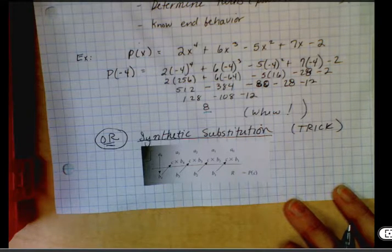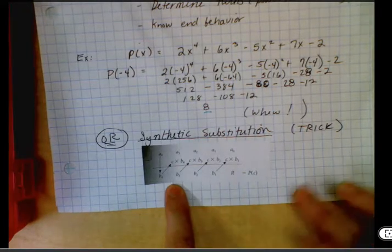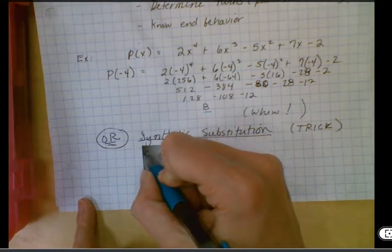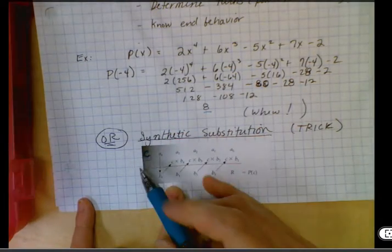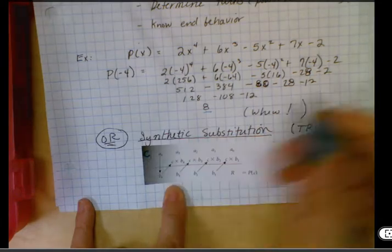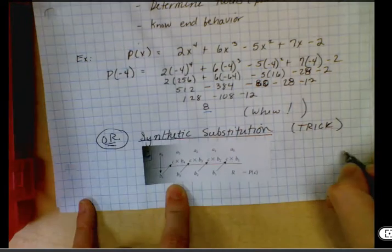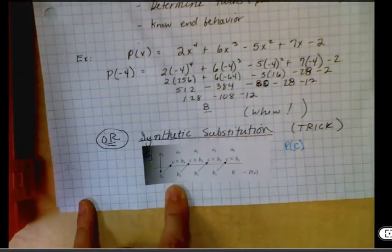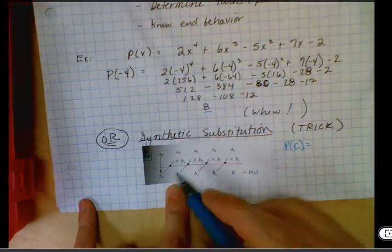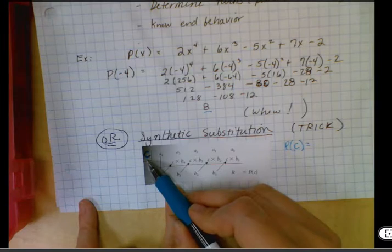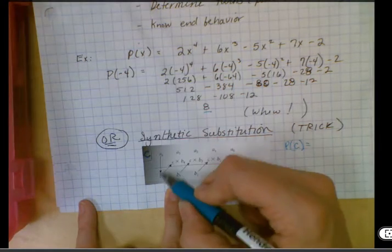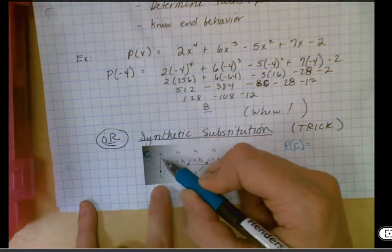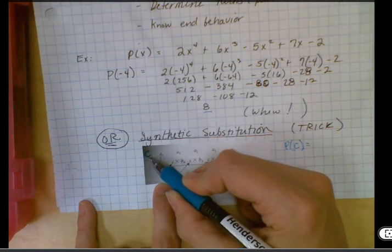And we're going to look at an example with this exact problem here in just a second, where this is supposed to be c here. So notationally, you put whatever, so if this is some polynomial, and I want to know what the output of c is into some polynomial, you put the little number right there. So you have some coefficient, and you just move it right down, you multiply it by that, you get a new number.